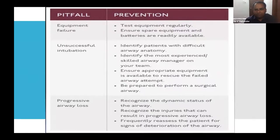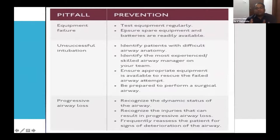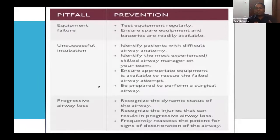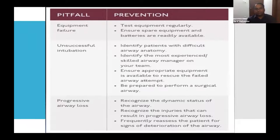Question: is there a difference between percutaneous tracheostomy and cricothyroidotomy? Percutaneous tracheostomy can be secured electively later. Cricothyroidotomy is an emergency procedure where a needle is placed into the cricothyroid membrane in situations where intubation fails or the patient is not being ventilated despite intubation due to suspected airway obstruction. The needle cricothyroidotomy can later be converted to a percutaneous tracheostomy.